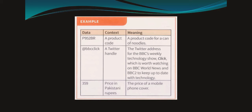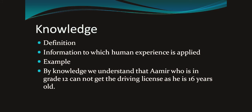Another example is @BBCclick — a Twitter handle. The Twitter address for the BBC's weekly technology show, Click, which is worth watching on BBC World News and BBC2 to keep up to date with technology. So now we are sure whether we should go to that site or not. Another example is 359 — the price in Pakistani rupees. Now it explains the price of a mobile phone cover. 359 is the price of a mobile phone cover. If we want, we can buy now because we can decide over it.